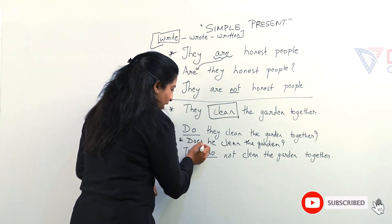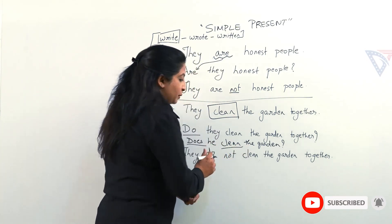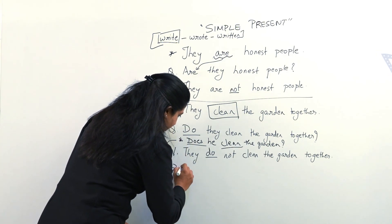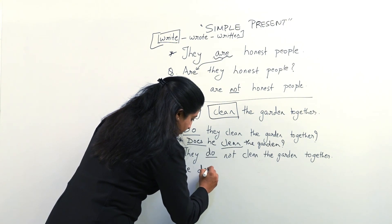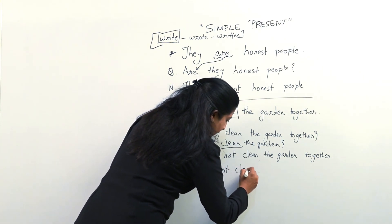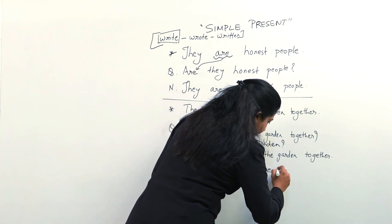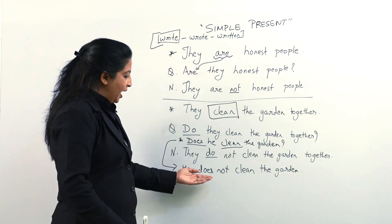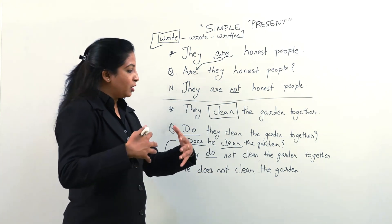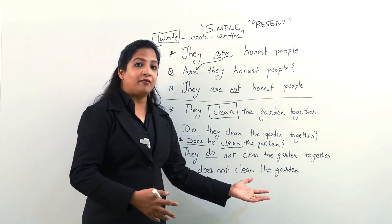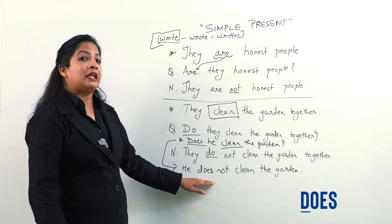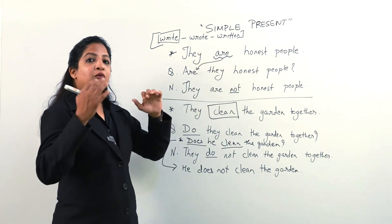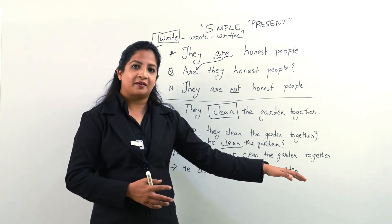Because we have taken does, this will be clean and not cleans. Same way here if I say that he does not clean the garden every Sunday or whatever. So when we have does we are not supposed to add s or es to the main verb because that responsibility is catered by does. So this is how you convert simple present into a question or into a negative.